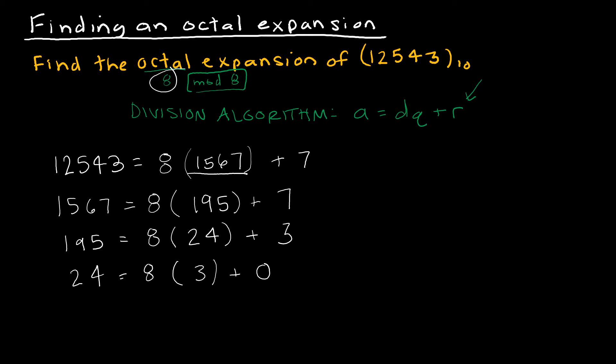And a lot of people want to stop here because they have a remainder of 0, so they think they're done. We are not done until the quotient is 0. So now I'm going to take my quotient of 3 and say that's 8 times 0 with a remainder of 3. Now I'm done because my quotient is 0.